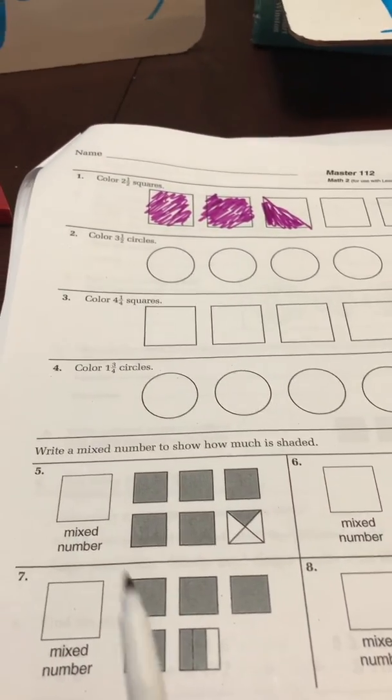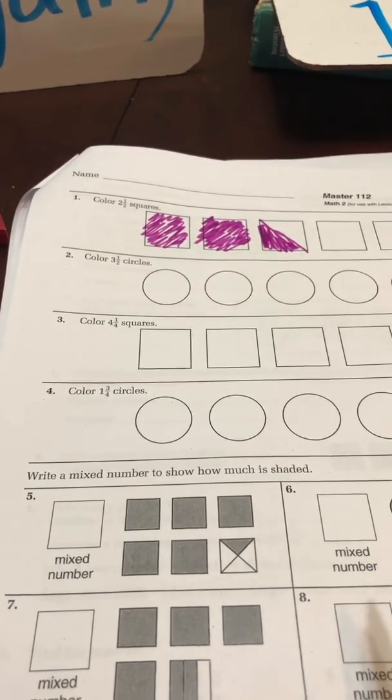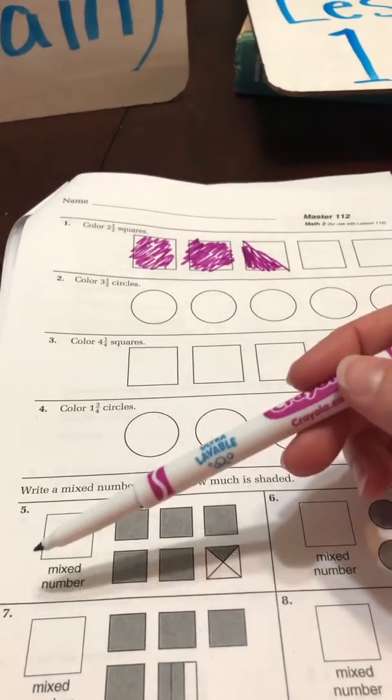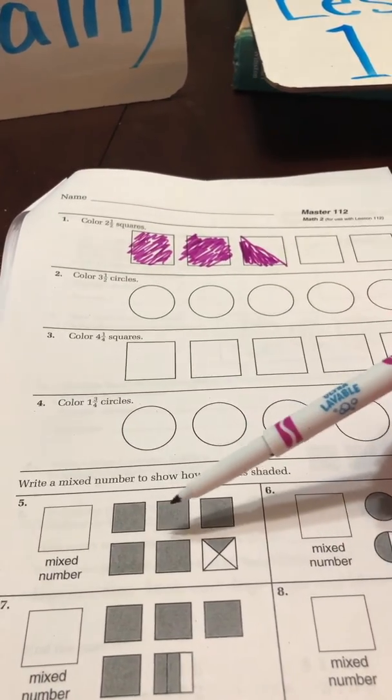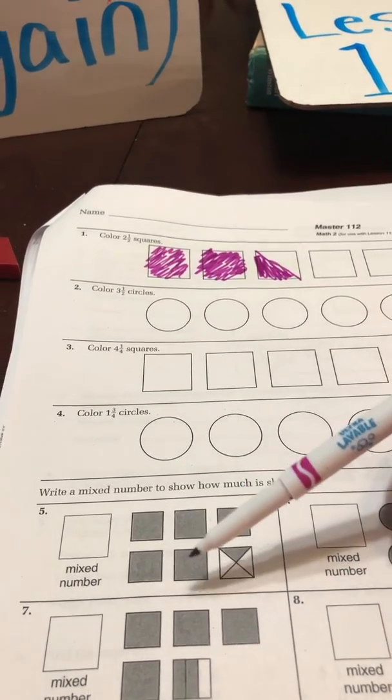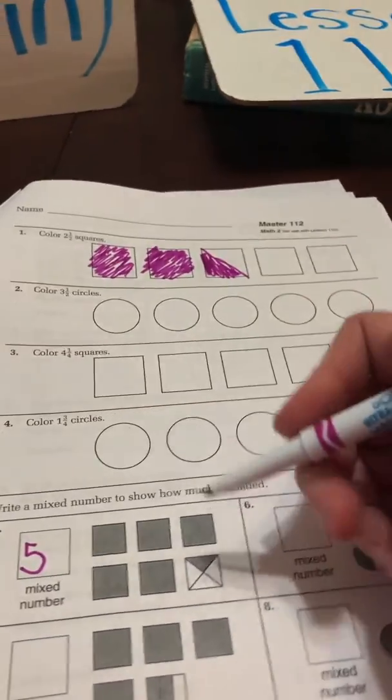But let's look down here at number five. It says write a mixed number to show how much is shaded. So the box is where we need to write our answers. So let's count. We have one, two, three, four, five squares that are completely shaded in. So the whole number we need is five.